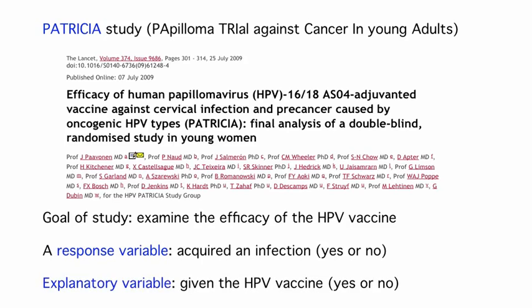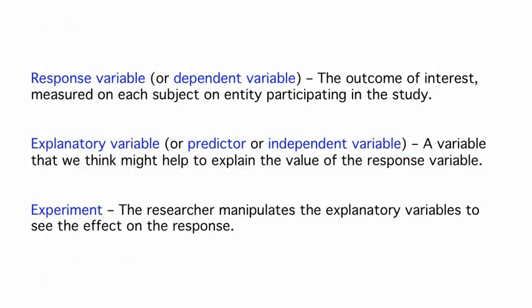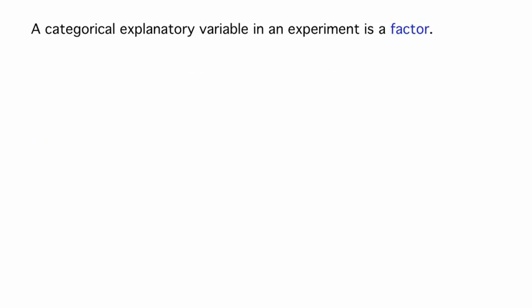In this example, the explanatory variable is also categorical. We believe that getting the vaccine affects the chance of getting an infection, and the explanatory variable is the vaccination status, with possible values yes or no. Since there are only a finite number of values of the explanatory variable that the researcher can possibly study, explanatory variables in experiments are typically categorical, and are called factors in this setting.